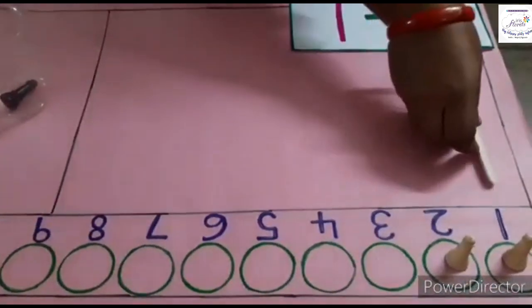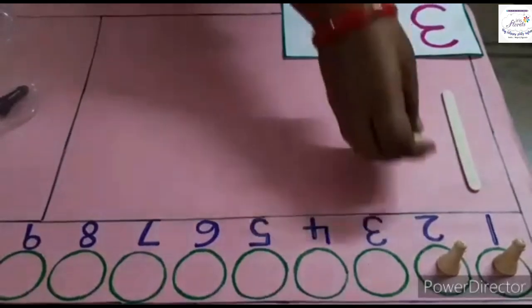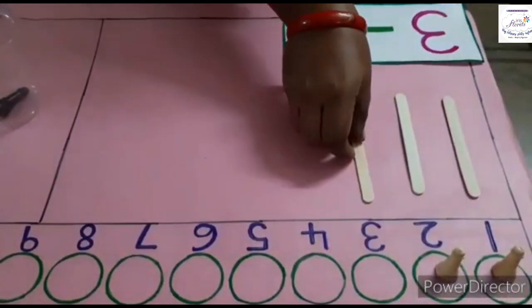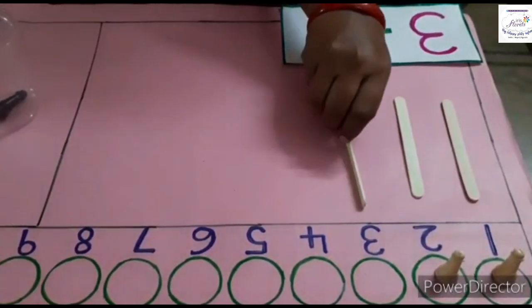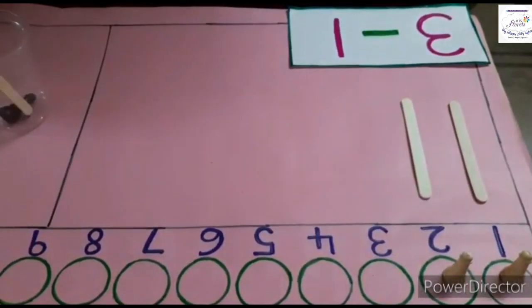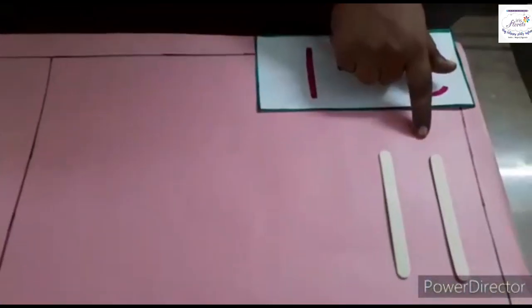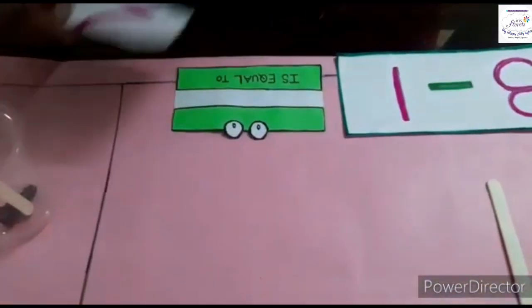In the same way I will explain with ice cream sticks: 1, 2, 3. Now 3 minus 1 means I am removing 1 ice cream stick from 3. How many are left over? 1 and 2. So 3 minus 1 equals 2.